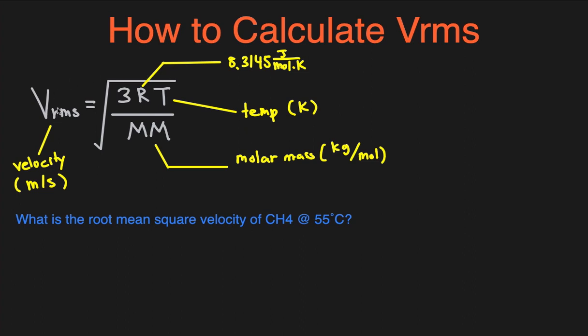So you just use this equation right here: vrms equals square root of 3RT divided by MM, where R is the gas constant 8.3145 joules over mole times kelvin, T is the temperature in kelvin, and MM is the molar mass in kilograms per mole.